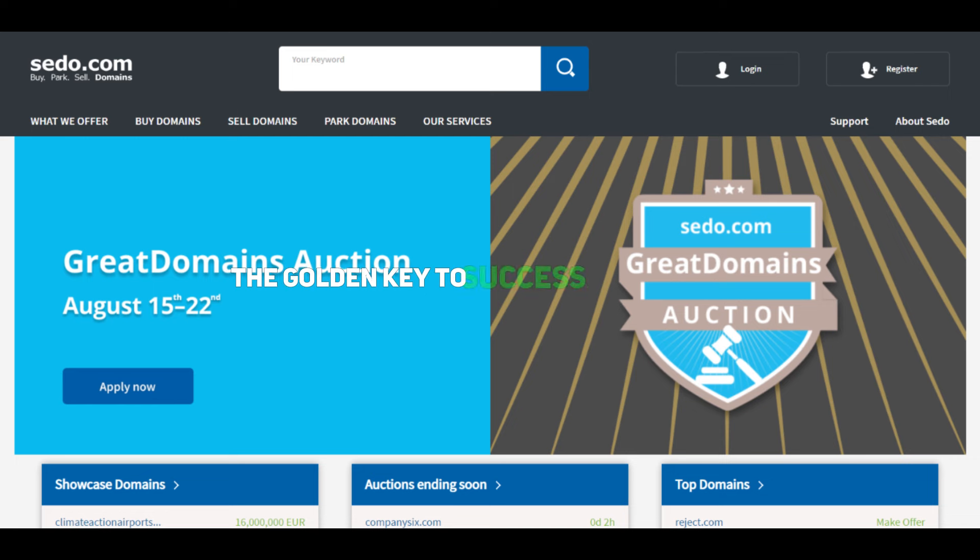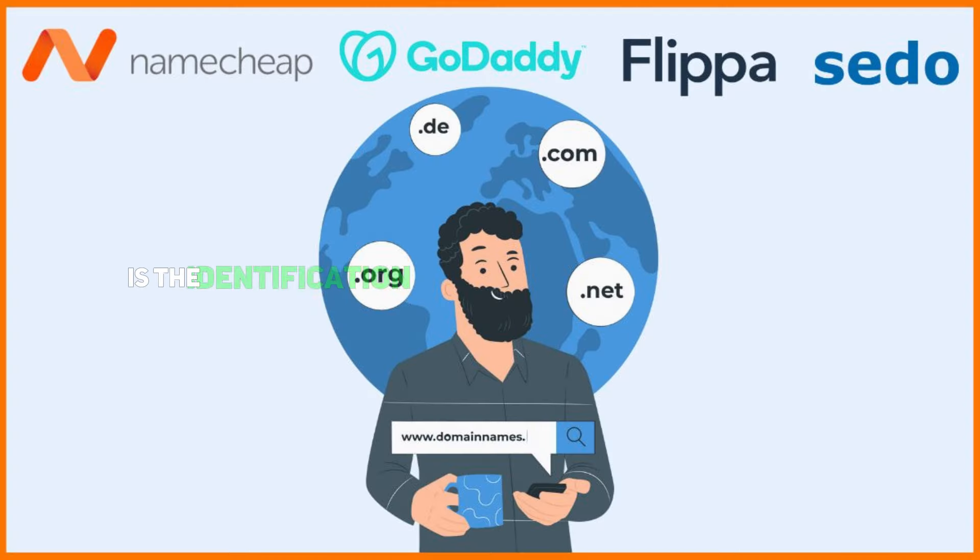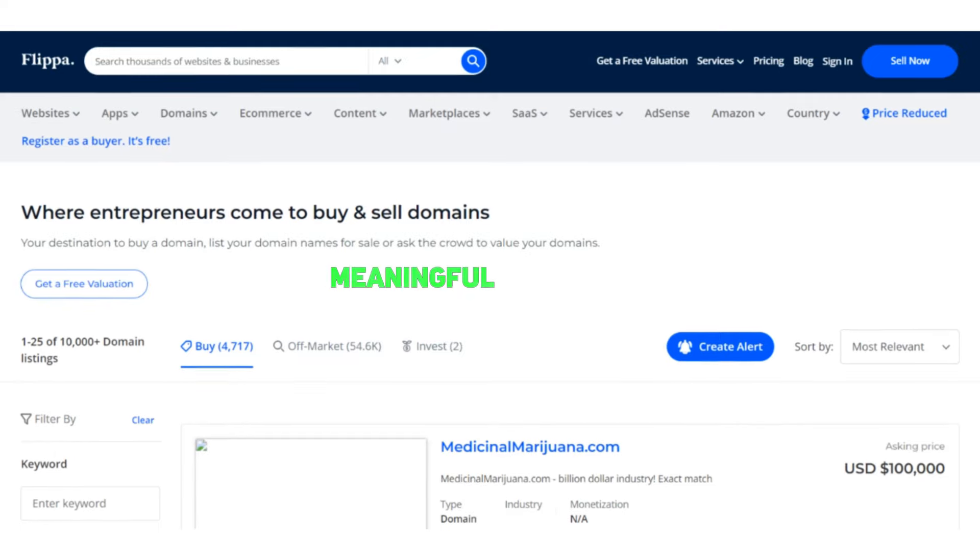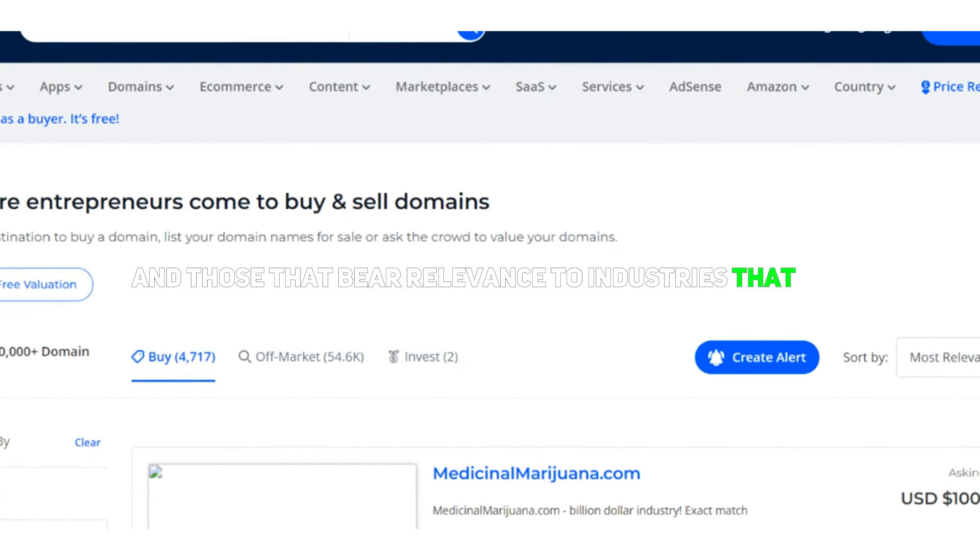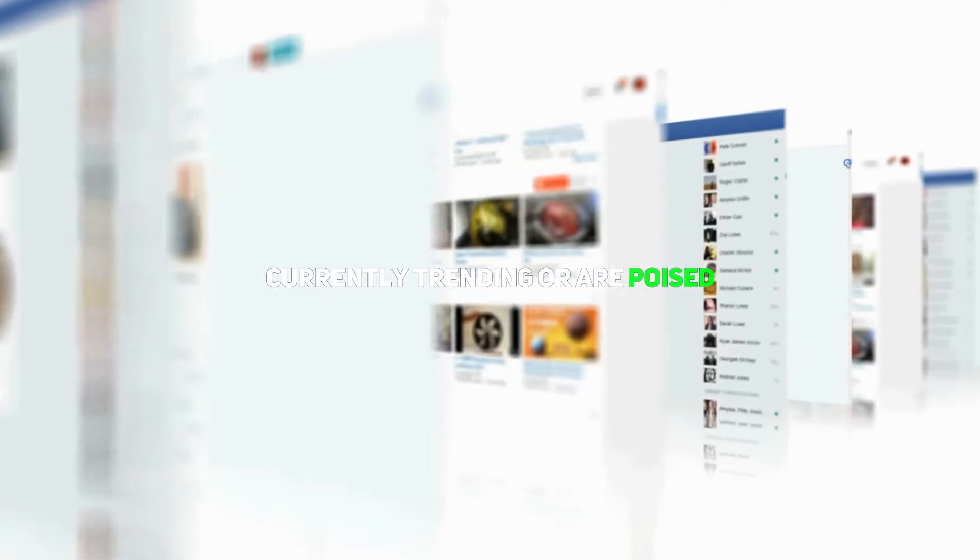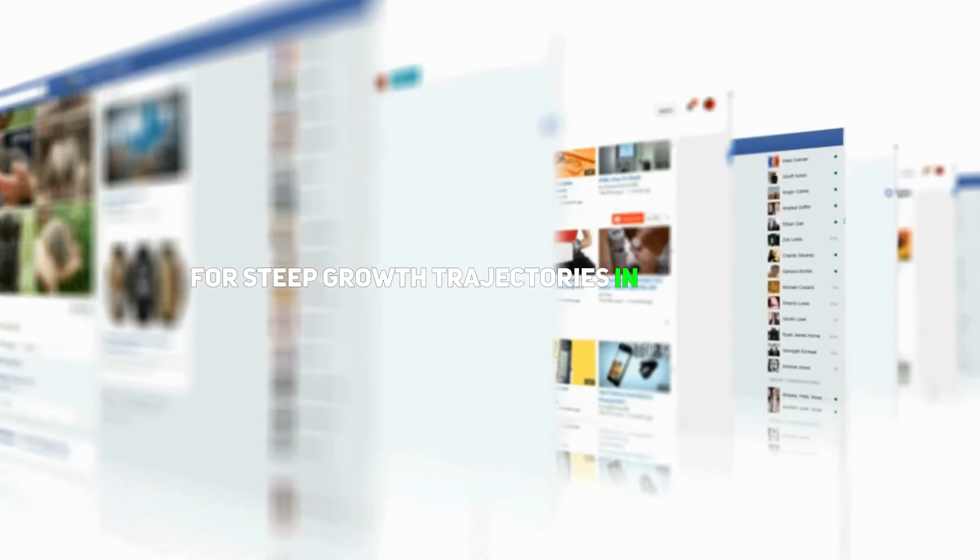The golden key to success in this realm is the identification and procurement of domain names that have auspicious demand characteristics but are not plentiful in supply. Elite strategies that seasoned domain traders deploy include zeroing in on domain names that are succinct, meaningful, recallable, and those that bear relevance to industries that are currently trending or are poised for steep growth trajectories in the future.